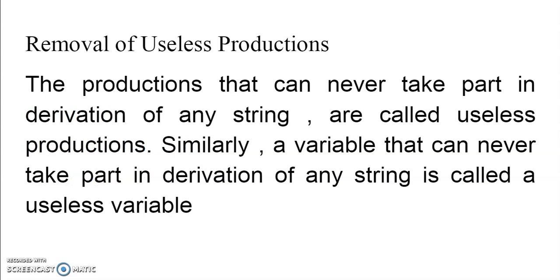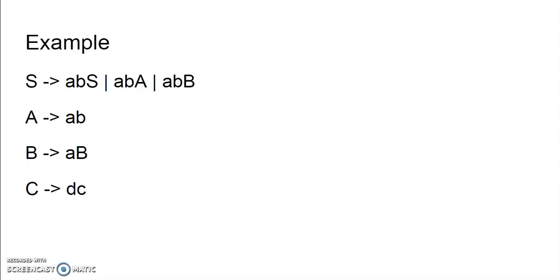Next we move on to removal of useless production. What do you mean by useless production? The productions that can never take part in the derivation of any string are called useless productions. Similarly, a variable that can never take part in the derivation of any string is called a useless variable. Let's look at an example — we have six productions. Which are our useless productions?